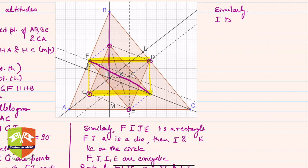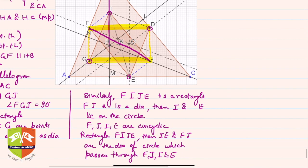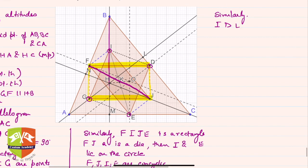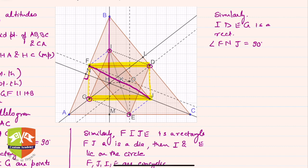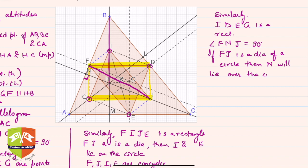IDEG is a rectangle, by the same logic. Now, angle FNJ is 90 degrees — because CN is an altitude, it is perpendicular. So angle FNJ equals 90 degrees, and hence if FJ is a diameter of a circle, then N will lie on that circle.